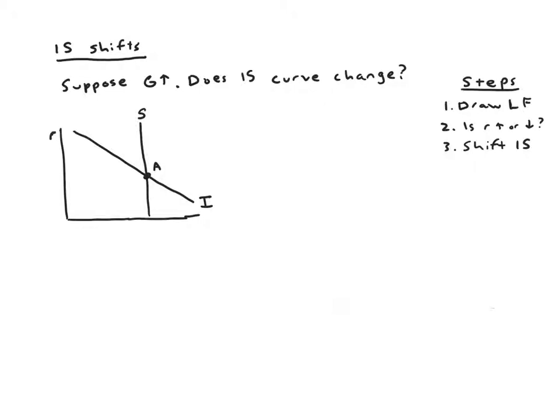We're going to shift S to the left a little bit and draw in the new S prime. The new equilibrium is labeled point B. We can see that S shifted to the left and R went up. The second step asks us: now that we've figured out what happens in loanable funds, are interest rates going up or down? The answer is up.